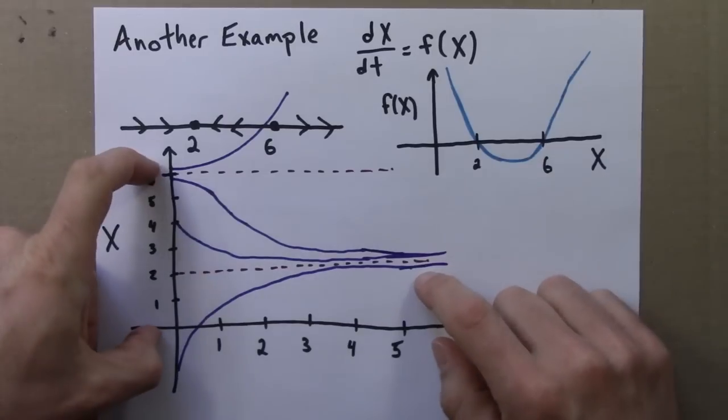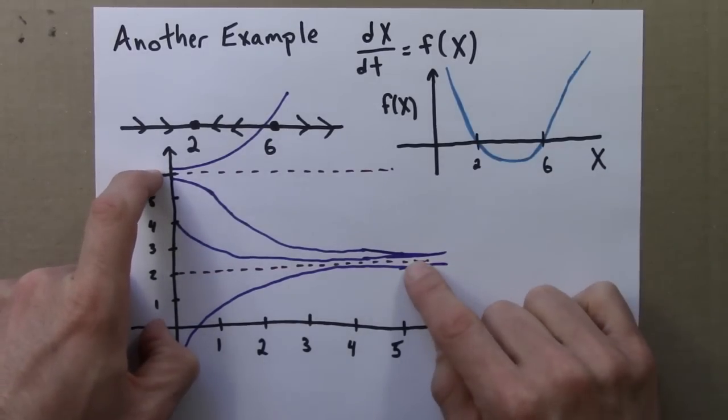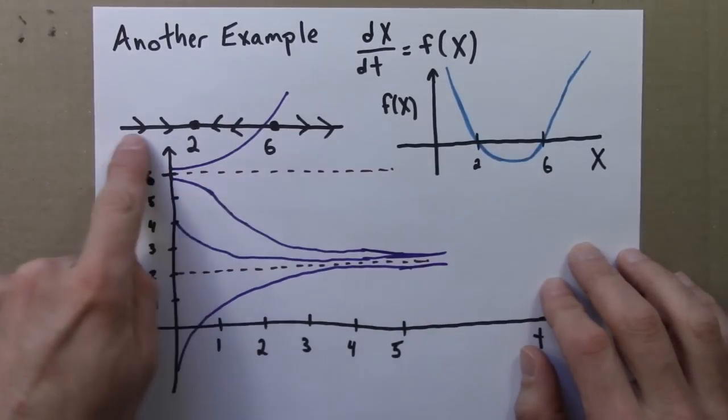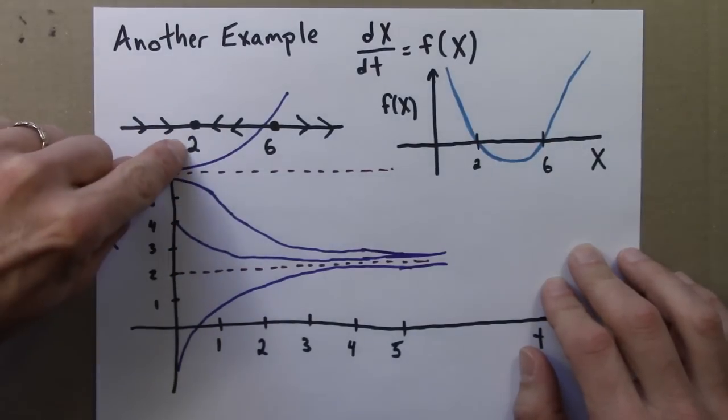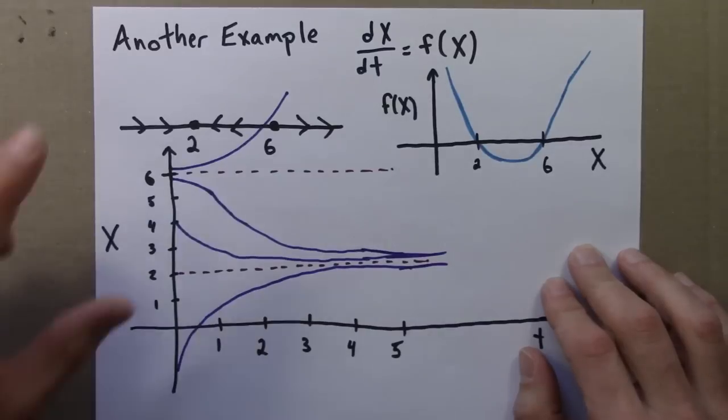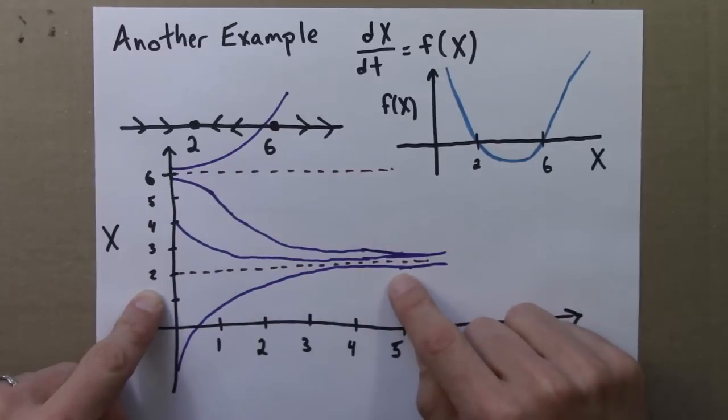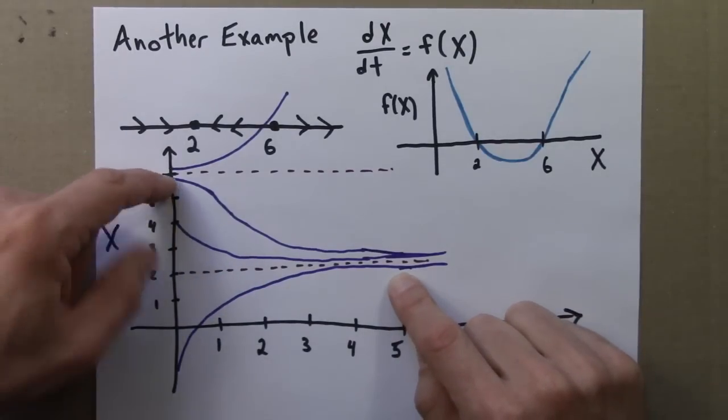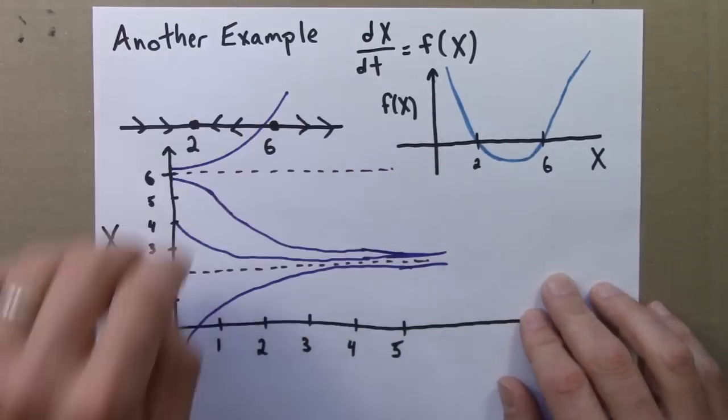These solution curves in purple contain the same information in the sense that this phase line does. We have a stable fixed point at 2, and it's attracting. A number of different orbits or solutions are all getting pulled in here. Anything less than 6 gets pulled here. If we start a little bit above 6, we get pushed away.